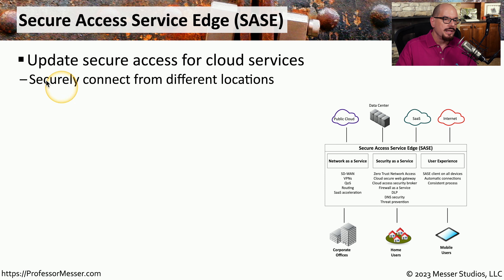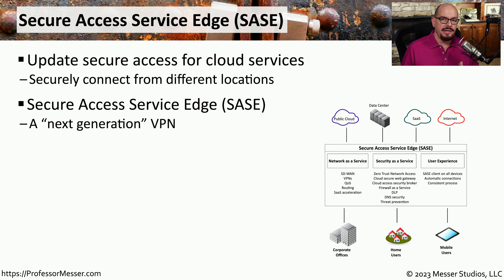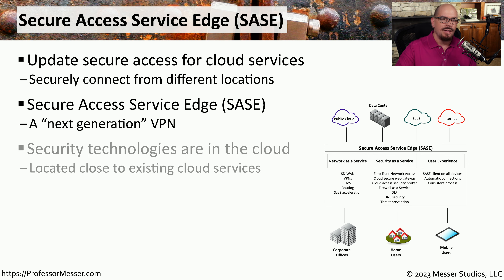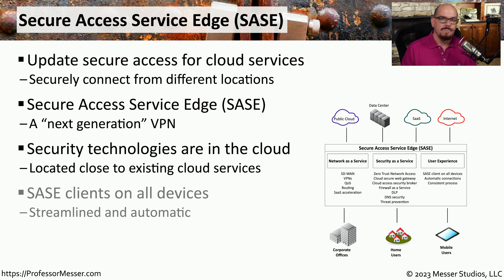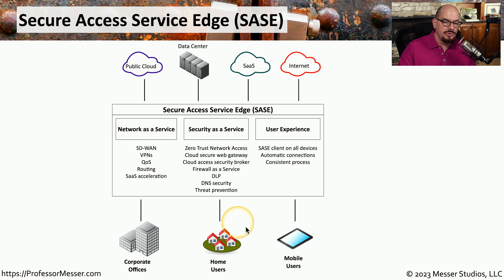To integrate secure VPN technologies with cloud-based infrastructures, we use Secure Access Service Edge, or SASE. You can think of SASE as the next generation of VPN that allows much more efficient communication to web-based applications. Along with our applications, all security technologies are now cloud-based and generally located next to the services we plan to use. We install SASE clients on all devices to communicate into the cloud securely. Whether you are a corporate office, home user, or mobile user, you simply use that SASE connection into the cloud and from there securely access any cloud-based service you need.